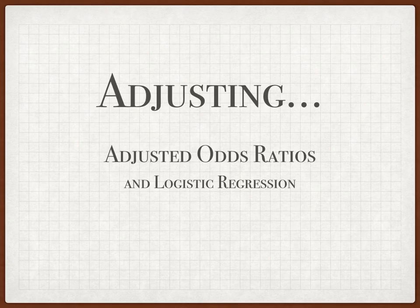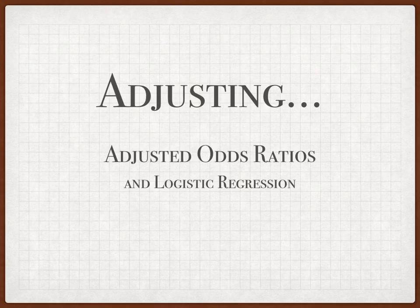There is something called an adjusted odds ratio, which uses logistic regression. Basically, this works backwards — hence the 'regression' portion — to find out which elements are independent risk factors. An adjusted odds ratio goes through this process to find out which risk factors independently add risk to developing an outcome.